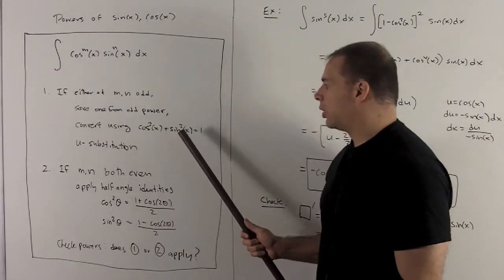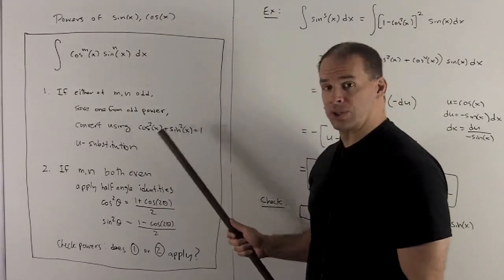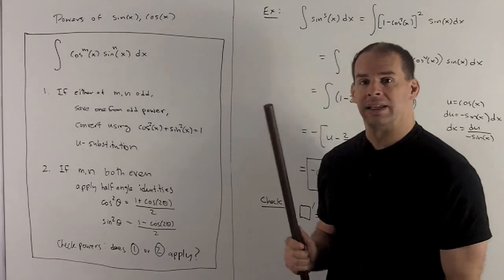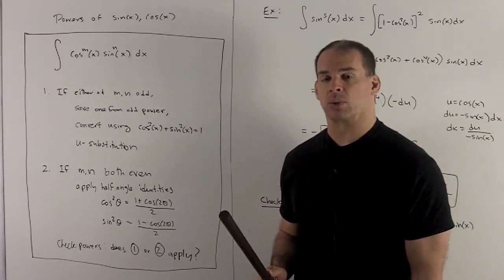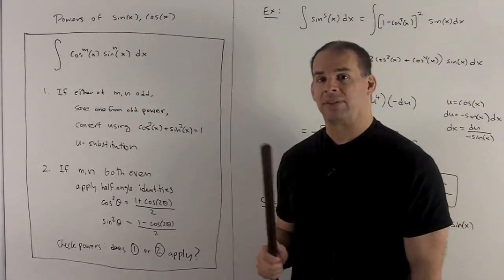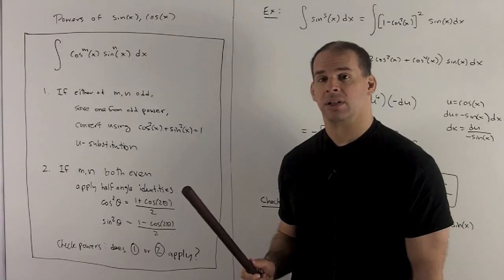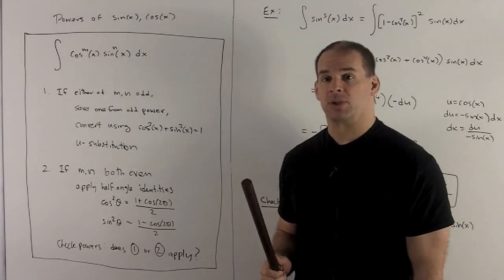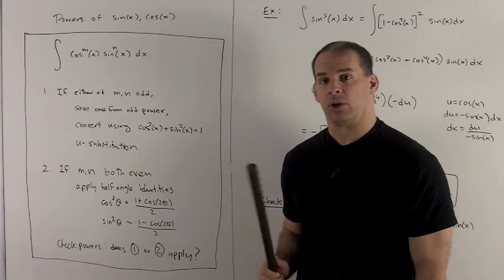My next step is we're going to take those sines and get rid of them by using the identity cosine squared plus sine squared equals 1, or sine squared equals 1 minus cosine squared. What will be left is a polynomial in cosine times sine of x dx. So there I want to do a substitution, u equal to cosine x, and then you just follow your nose out.